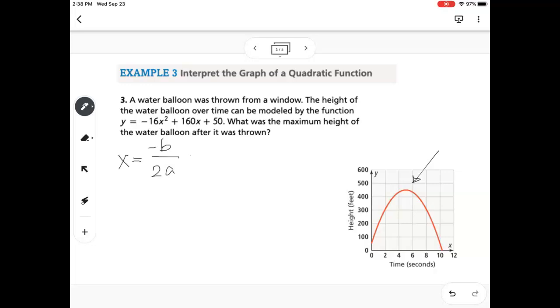So negative b over 2a is going to be negative 160 divided by 2 times negative 16. And a mistake sometimes people make with this is they try to type it all in their calculator at once, and the order of operations can mess you up there. So this would be 160 divided by negative 32. So I like to simplify all the way there, and then I get 5.